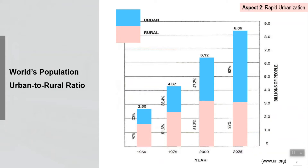This figure shows that by 2025, 62 percent of the world population will be living in urban areas, and this number has increased from 30 percent in 1950, then 38 percent in 1975, 47 percent, and now 62 percent.